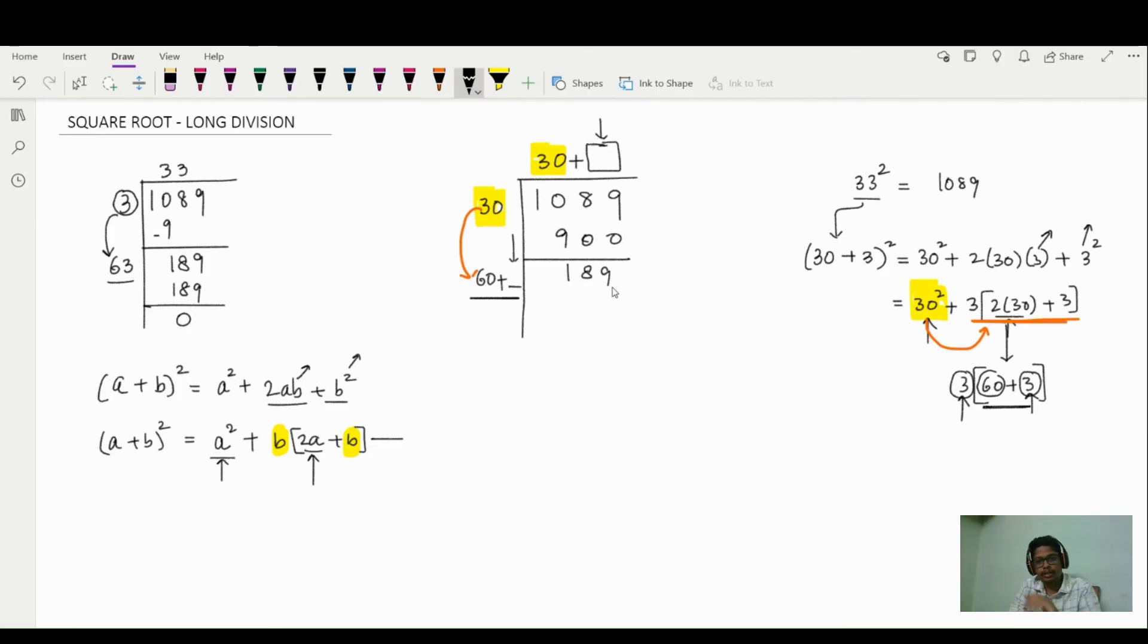So since 189 ends with 9, 9 is possible only when you multiply 3 times 3 or 7 times 7. In this case, we already know it is 33². So I'll write 3 here. When I write 3 here, I should write the same 3 here. So that will fulfill this criteria: b(2a + b). So 2a is already done. So b and b are here: 3 and 3. Now if you see here, it is 60 + 3, 63 times 3 is 189 and when you subtract, you get 0. That means 1089 is a perfect square and the final answer, the square root, is at the top: 30 + 3, that is 33.